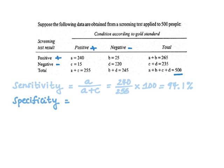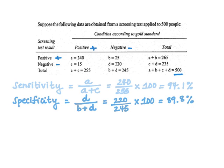Specificity is the proportion of people without the outcome who were correctly identified by the screening test. The formula is D divided by B plus D. This gives us 220 divided by 245, multiplied by 100, to yield 89.8 percent specificity. Remember, these two values are measures of the screening test itself, comparing true positives versus true negatives.